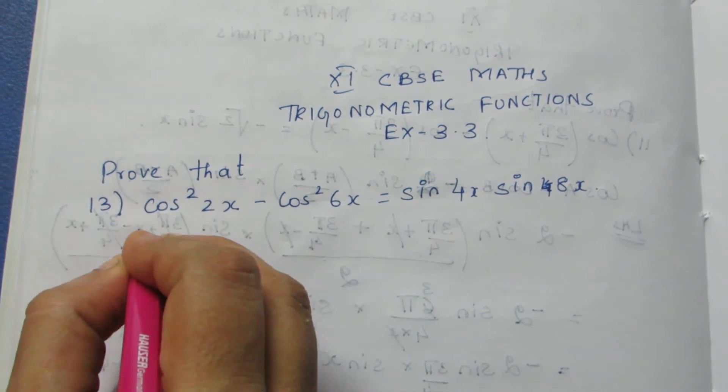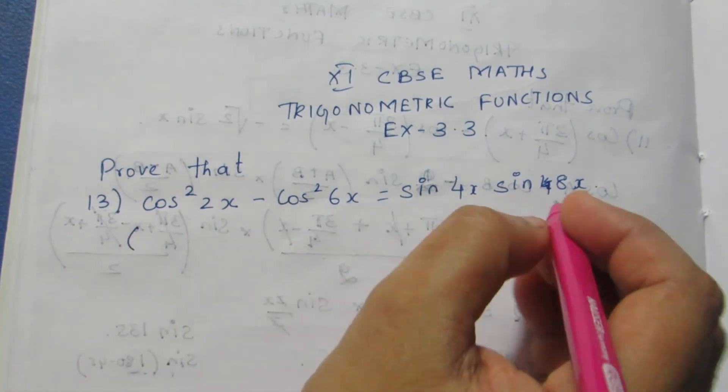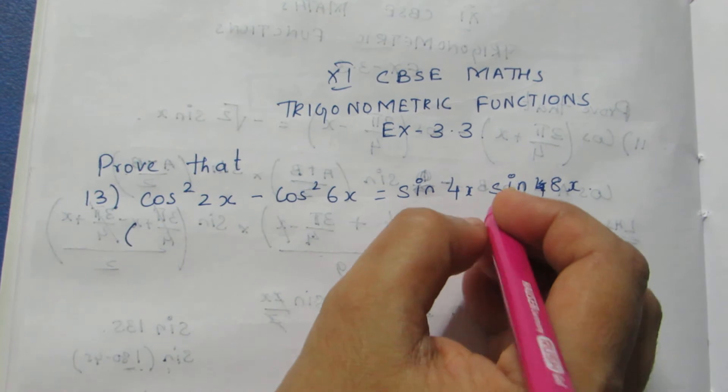Now I can write this as cos²θ = 1 - sin²θ.